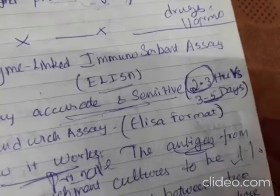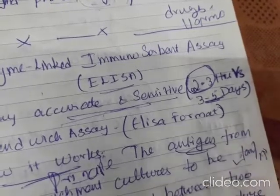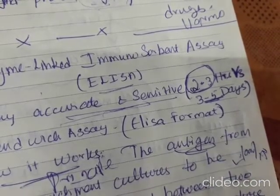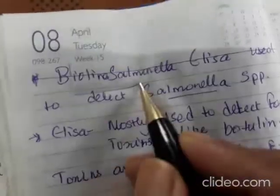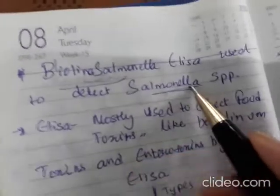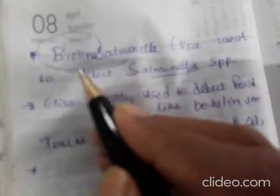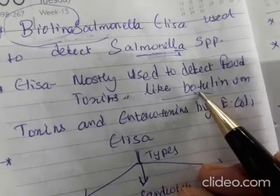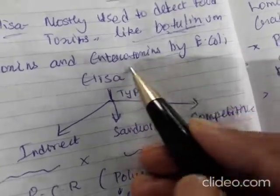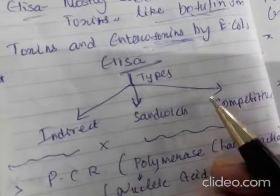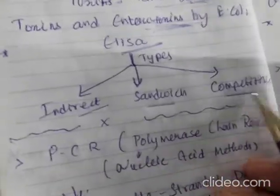There is a capture antibody and a detection antibody. This method is used to detect food toxins like botulinum toxins, sea toxins, and enterotoxins. In the ELISA method there are different types: indirect method, sandwich method, and competitive method.